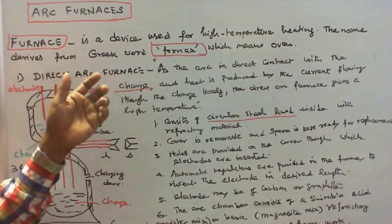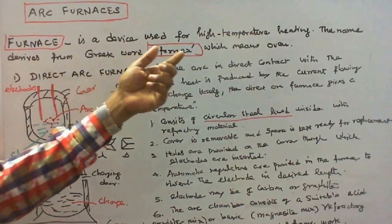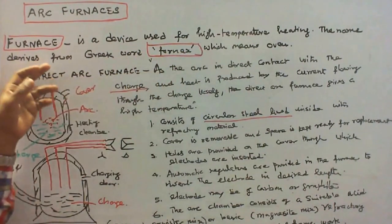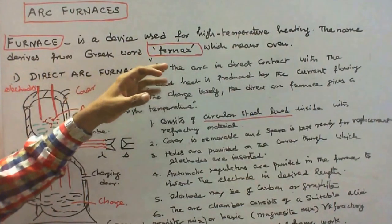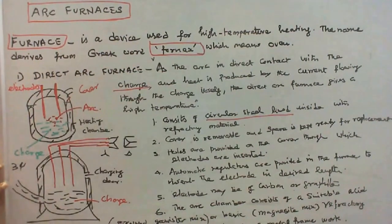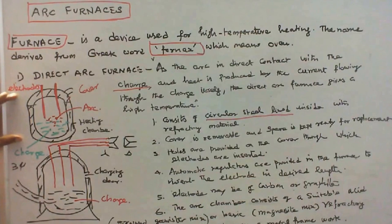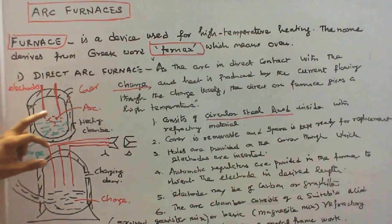Furnace is a device used for high temperature heating. The name derives from Greek word Fornox, which means oven. This is a single phase direct arc furnace. This is a three phase direct arc furnace. This is the charge, this is the melting chamber. In single phase we are using two electrodes.